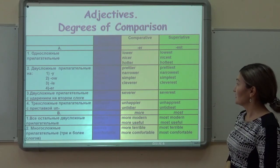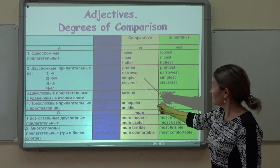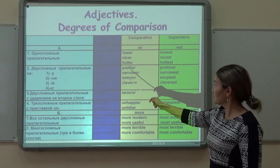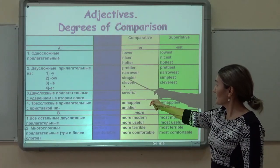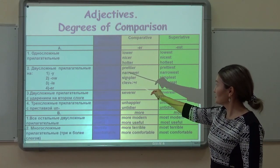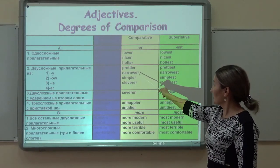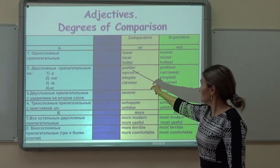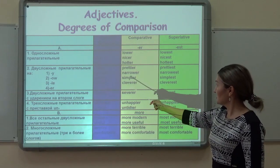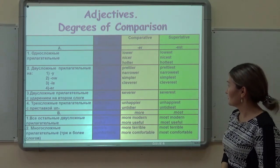Next, what concerns complex adjectives. If the adjective has two syllables and ends in Y, we have to put I instead of Y. For example: pretty, prettier, the prettiest.